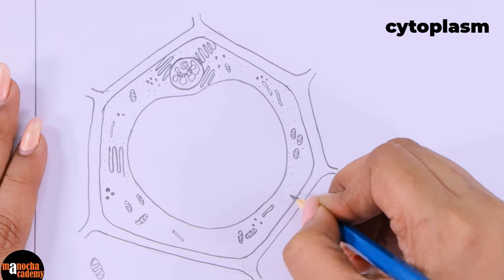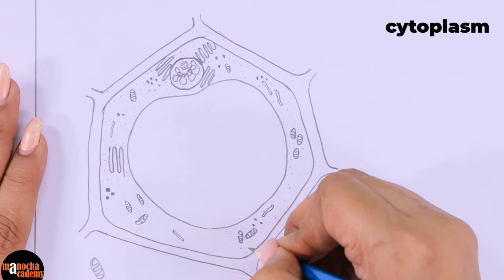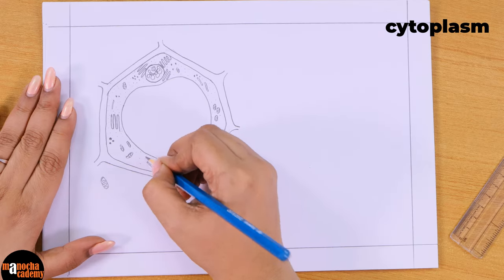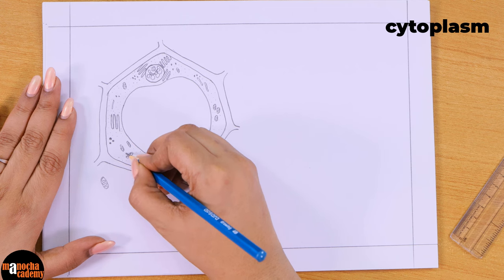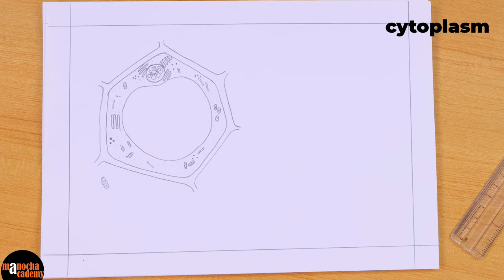There is one cell organelle which we have not drawn yet, which is the chloroplast, which is only present in plant cells. So we will draw that after this. Now as you can see, we will keep the vacuole clean and we will draw dots in the cytoplasm. That will give you a nice contrast.